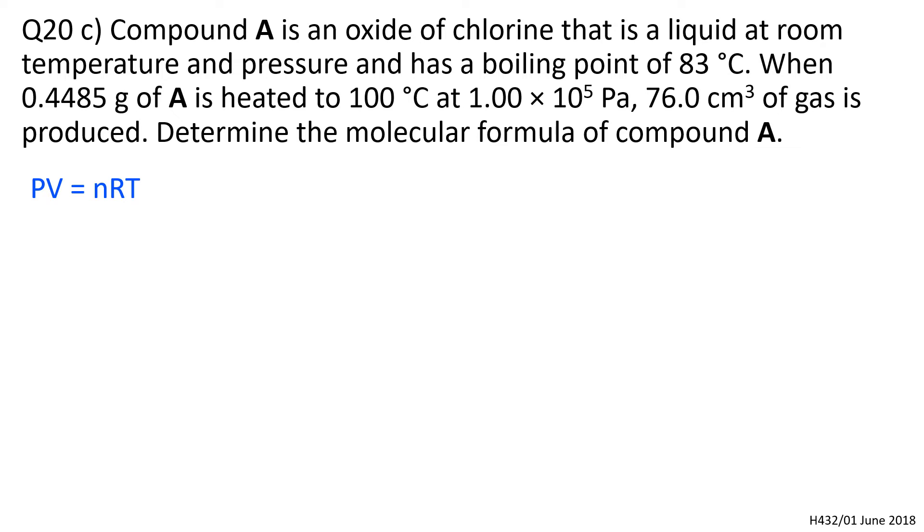We've got pressure and temperature - 83 degrees Celsius is a red herring because the actual temperature in the question is a hundred degrees Celsius. We have P, R, V, and T. How are we going to get to n?